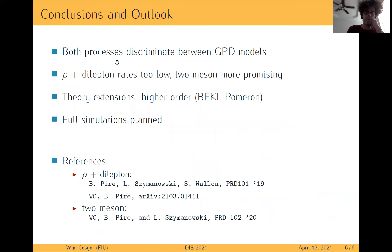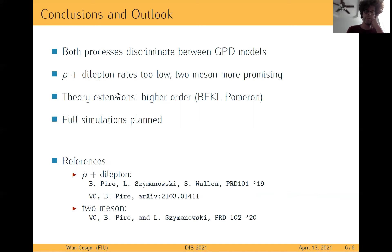To summarize, I showed results for two diffractive exclusive processes where we are able to discriminate between different GPD models. The dilepton process rates look too low at the moment, while the two meson case looks more promising. There are theory extensions that could increase the cross-section, especially including the BFKL corrections for the pomeron, and we also have full simulations planned for the EIC detectors. Here are some references if you want to find out more. Thank you.